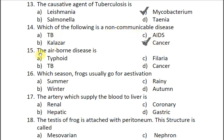Question fifteen: The airborne disease is — A typhoid, B TB, C filaria, D cancer. The correct answer is B TB. It is caused by inhalation of droplets containing Mycobacterium tuberculosis.